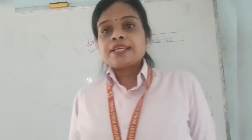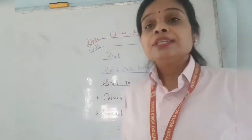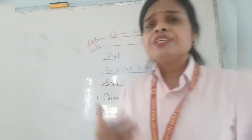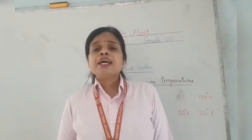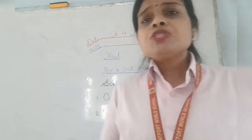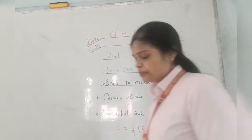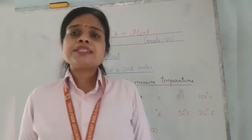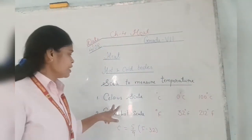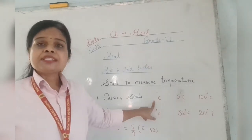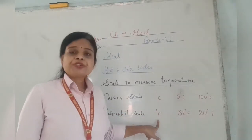We have different scales to measure the temperature. Just as water is measured in milliliters and length in centimeters or meters, temperature is also measured in three different scales: Celsius, Fahrenheit, and Kelvin. In your syllabus, we have only two scales — Celsius scale and Fahrenheit scale. Celsius scale is denoted by degree C, and Fahrenheit is denoted by degree F.